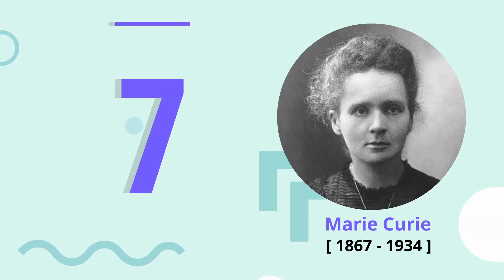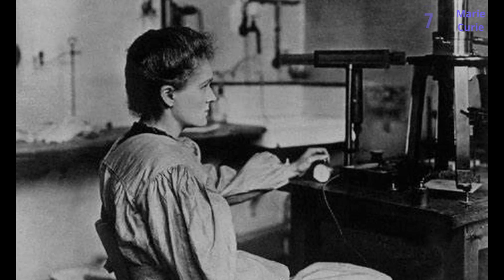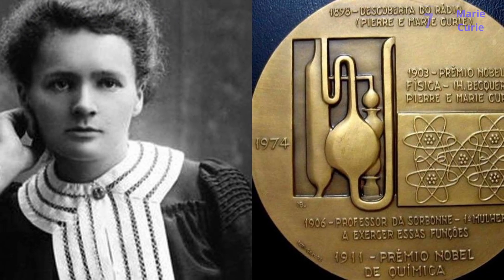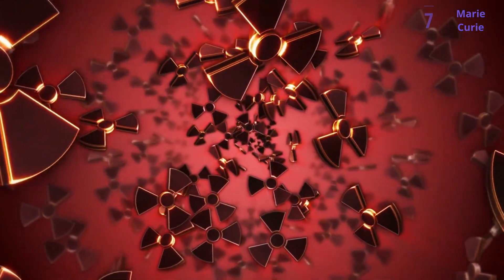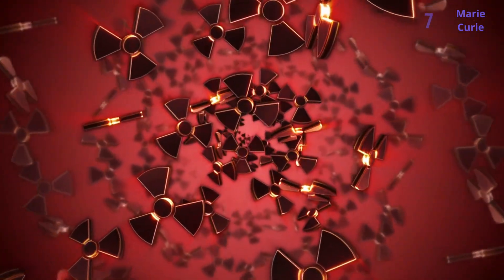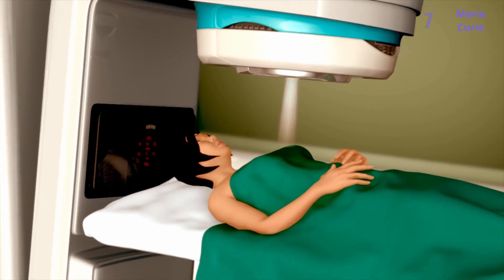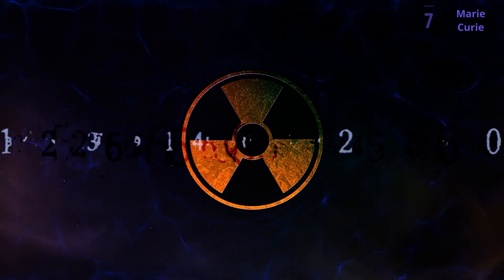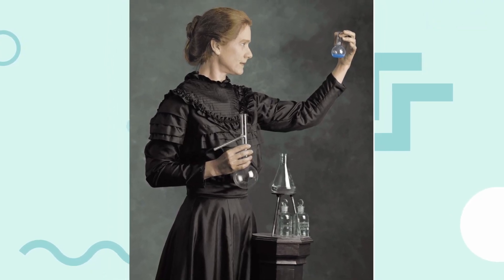Number 7, Marie Curie. Back in the day, science wasn't always welcoming to women. But Marie Curie didn't let that stop her. This brilliant scientist became the first person ever to win a Nobel Prize in two different sciences, physics and chemistry. Her groundbreaking research on radioactivity, a mysterious energy released by some atoms, led to amazing medical discoveries. Radioactivity is now used to fight cancer and see inside our bodies. Sadly, exposure to radiation during her experiments eventually made Marie Curie sick. Her story is one of courage, amazing discoveries, and a reminder that science is for everyone.